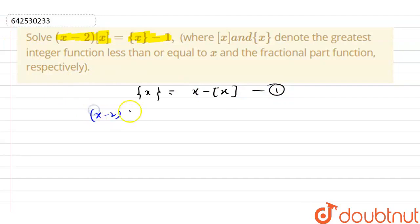So what is my equation? x minus 2 greatest integer x equals to fractional part x minus 1. Now here x minus 2, I can write the value of greatest integer x as x minus fractional part x by using equation 1.